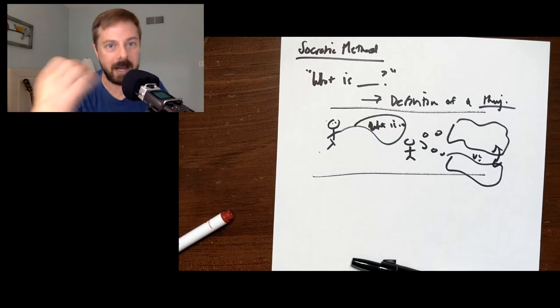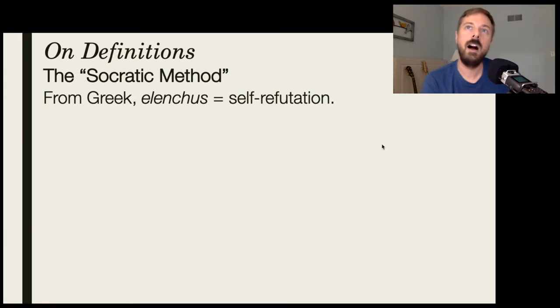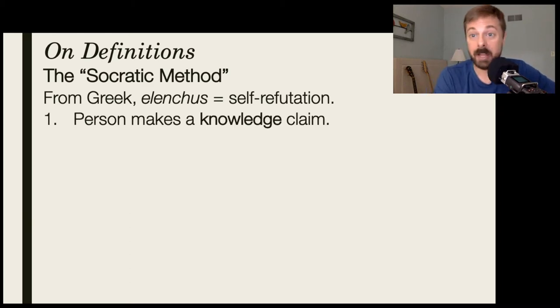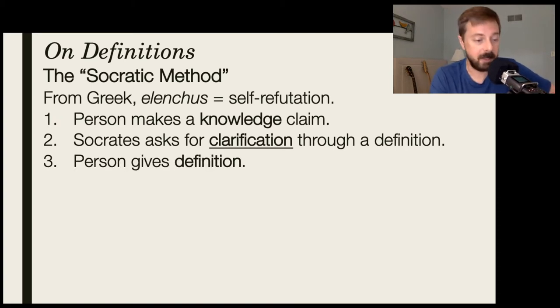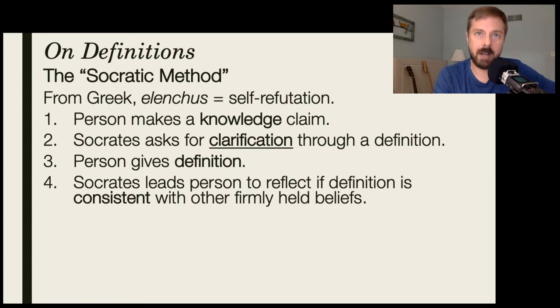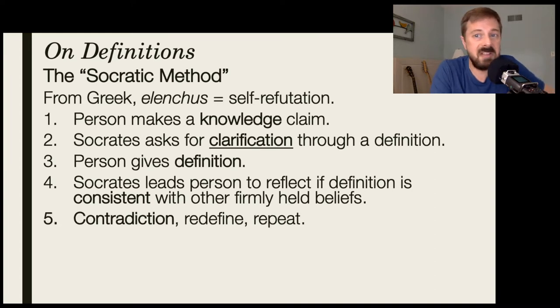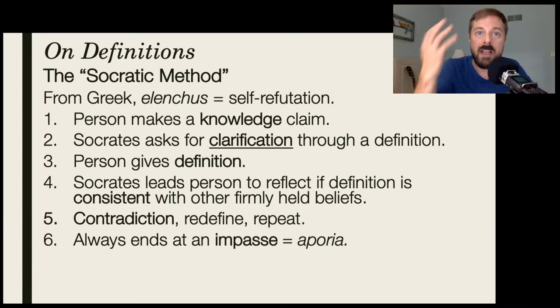So in this Greek elenchus, this self-refutation of the Socratic method, it always begins with someone claiming that they know something. And then a person comes up with some kind of definition. And then they have to reflect critically. Socrates leads someone through this kind of reflection on this definition to see if it's consistent with these other beliefs that they have. And it almost never is. There's always some kind of contradiction, which causes the person to have to redefine and repeat this whole process.